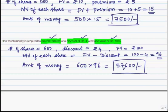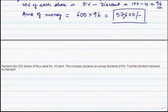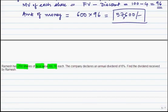Fine, let us proceed. There is a person Ramesh who has 250 shares of face value Rs 10. The company declares an annual dividend of 6%. We have to find the dividend received by Ramesh — how many rupees he has received. Let us recollect that dividend is always calculated on face value.